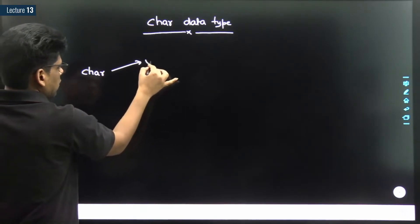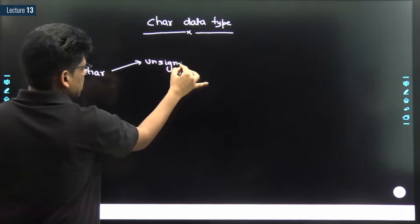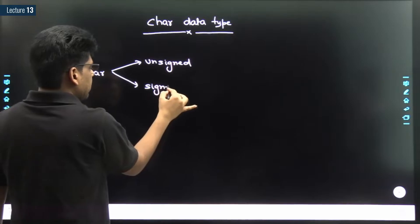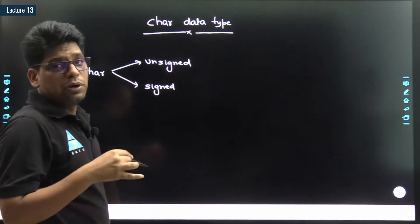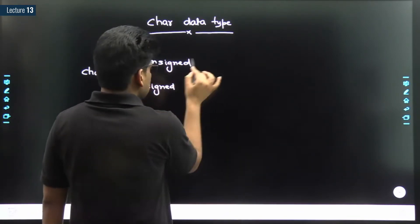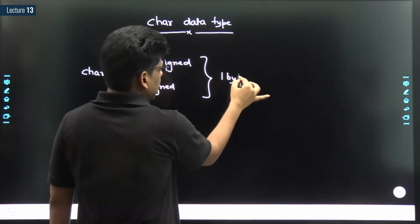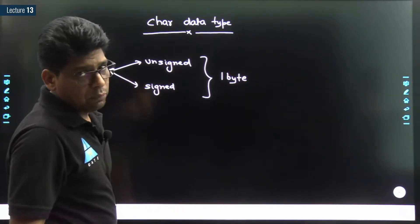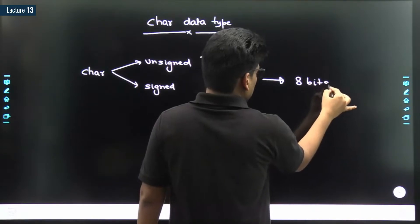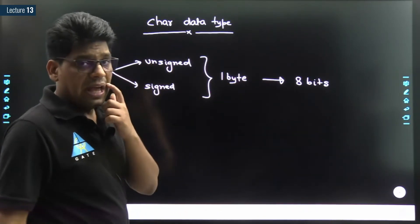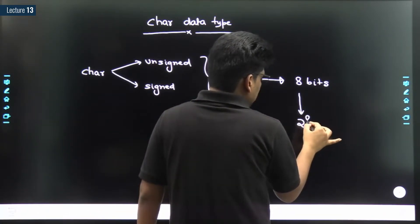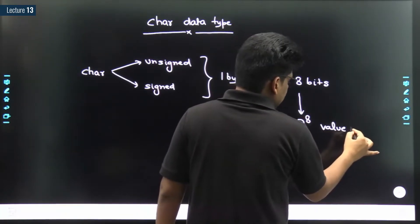A char could be unsigned char or it could be signed char. Whether it is unsigned or signed, a character always occupies one byte in memory. One byte means it occupies eight bits. With eight bits, how many possible values can we generate?